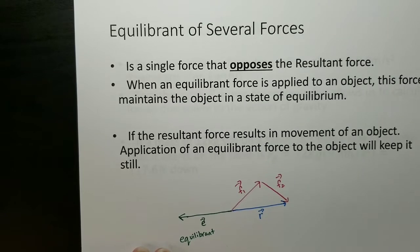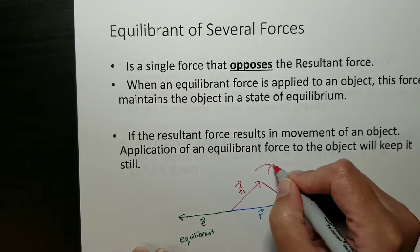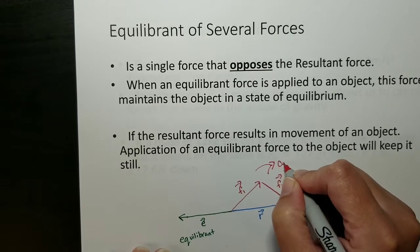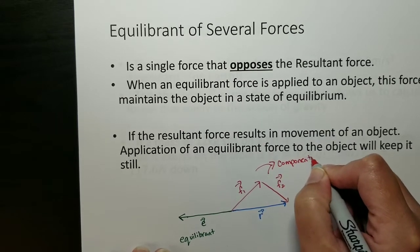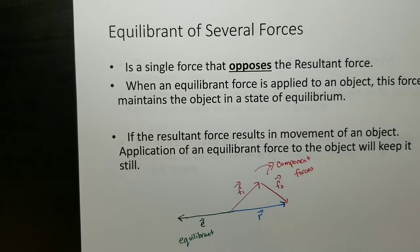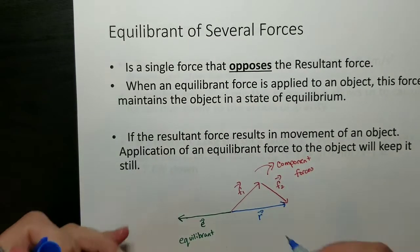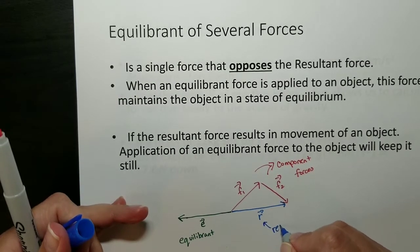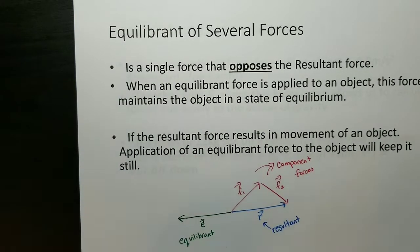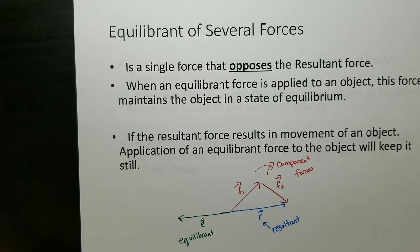That's a standard vector diagram for the kinds of forces that we'll be looking at. If your resultant force was going to result in the movement of an object, if you applied the equilibrant force, that would keep the object still. So that's going to be an important thing. For instance, if we have an object that's not moving, then we know that there would have to be an equilibrant force and a resultant force that were in balance.